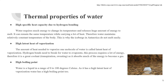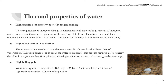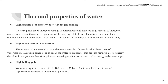The specific heat capacity is defined as the amount of heat required to raise the temperature of one kilogram of a substance by one Kelvin. Water requires much energy to change its temperature and releases a huge amount of energy to melt — it can remain the same temperature while carrying a lot of heat. Therefore, water maintains a relatively constant temperature of the body. This is why the icebergs in Antarctica do not melt easily.